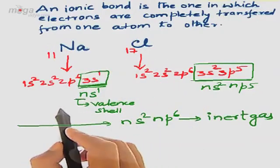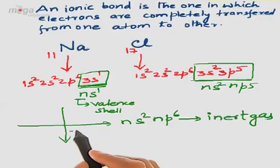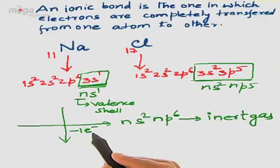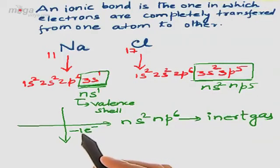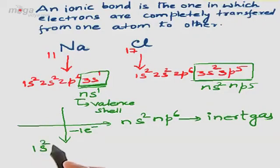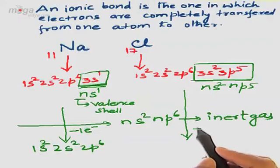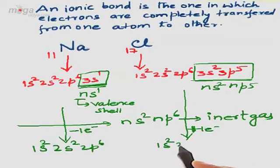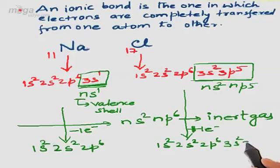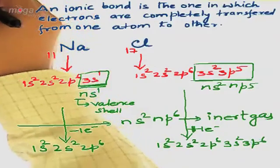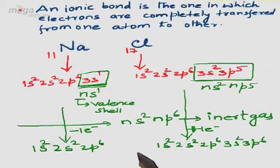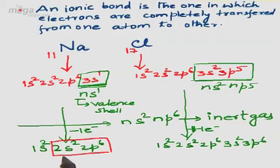Hence, we observe that the sodium atom undergoes loss of 1 electron — meaning 1 electron is removed from the valence shell of sodium. Its new configuration becomes 1S², 2S², 2P⁶. For chlorine, we add 1 electron, which is transferred from sodium to chlorine, and the new configuration becomes 1S², 2S², 2P⁶, 3S², 3P⁶. After the loss of 1 electron from sodium and gain by chlorine, the new valence shell configuration 2S², 2P⁶ now resembles NS², NP⁶ configuration.